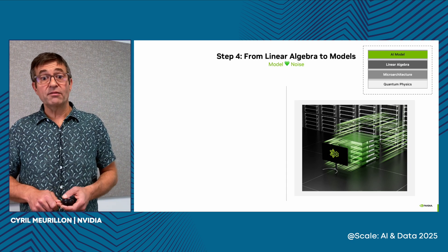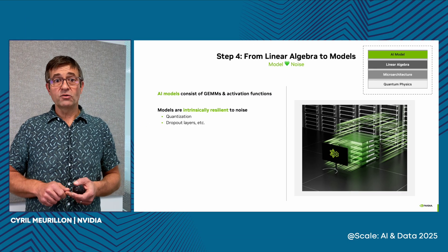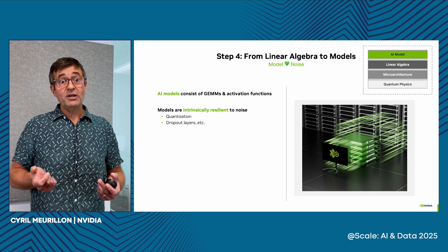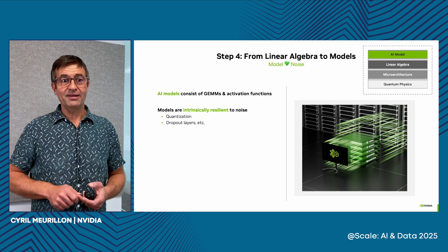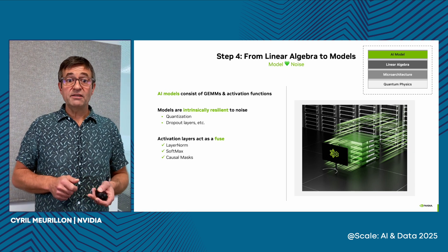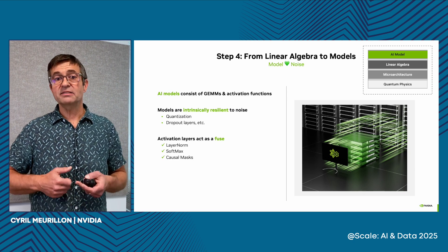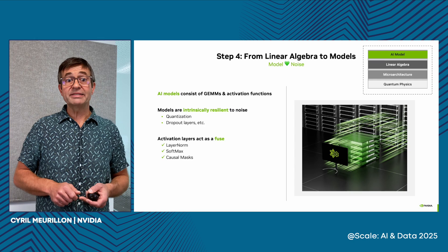We're finally reaching the final layer of the stack: the AI model. Models essentially consist of a complex network of interconnected GEMMs and activation functions. What happens to an SDC that has survived the journey and is reaching the model layer? Well, it depends on many complex factors. Models are intrinsically resilient to noise — quantization, for example: some models can be trained on a single digit of precision. Small errors may even help models: dropout layers accelerate training by injecting random zeros, and LLM temperature improves the quality of prediction by injecting random noise. Some of that resiliency can be traced to specific activation layers in transformers — namely layer norm, softmax, and causal mask. Those functions may attenuate the impact of outliers and in some cases even stop entirely the propagation of explosions.